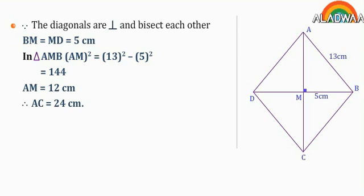Therefore, AC equals 24 cm. Then the surface area of rhombus equals half times 10 times 24 equals 120 cm squared.